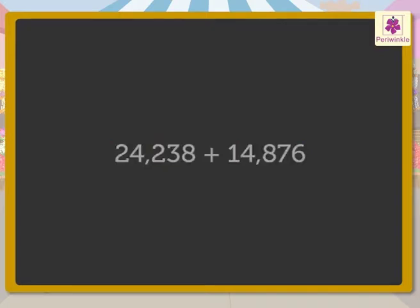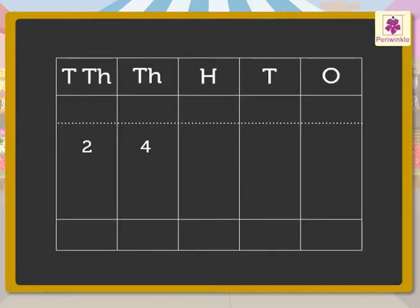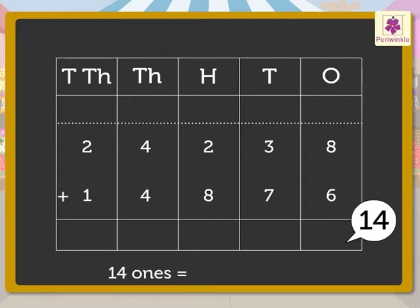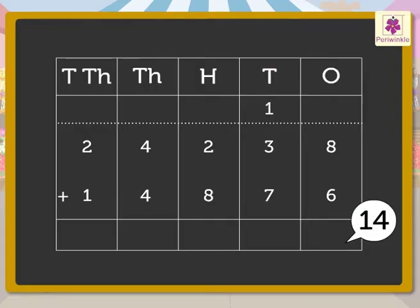Now, instead of counting the dots, we will add the numbers directly. Write the numbers twenty-four thousand two hundred thirty-eight and fourteen thousand eight hundred seventy-six in the place value chart. First, we add the numbers in the ones column: eight and six. We get fourteen. Regroup the fourteen ones — fourteen ones equals one ten and four ones. Carry the one ten to the tens column and write four in the ones column.